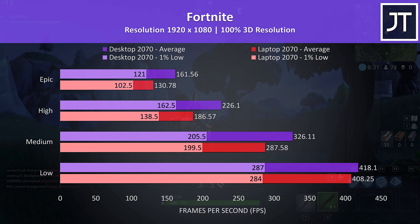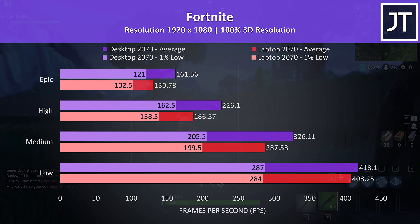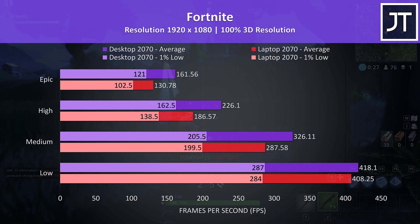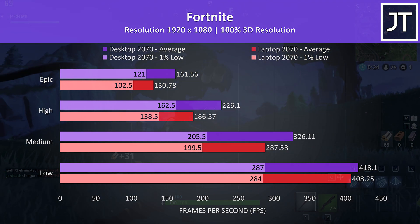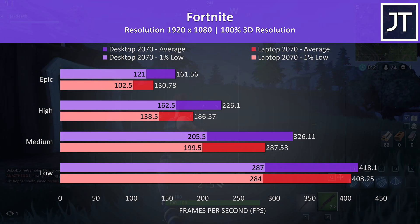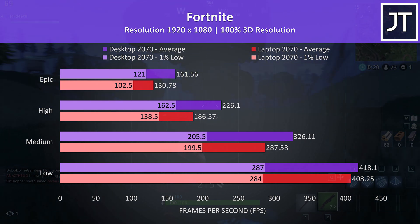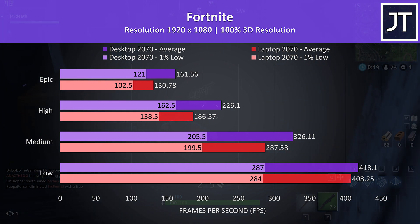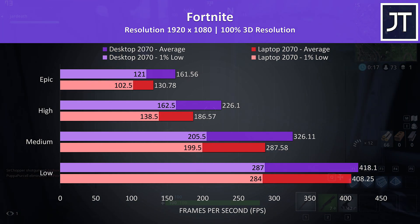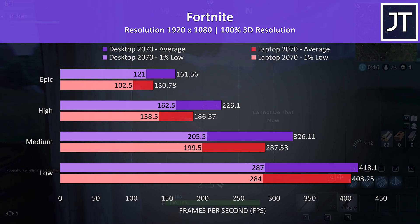Fortnite was tested using the replay feature with the exact same replay file used on both machines. The difference was minor at low settings as the GPU is presumably utilized less, but at max settings the desktop was 23.5% faster than the laptop — the second biggest difference out of all games tested.